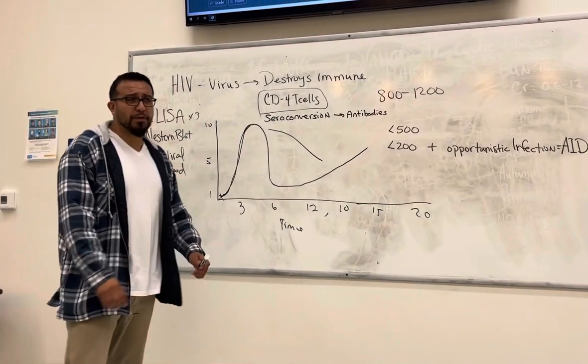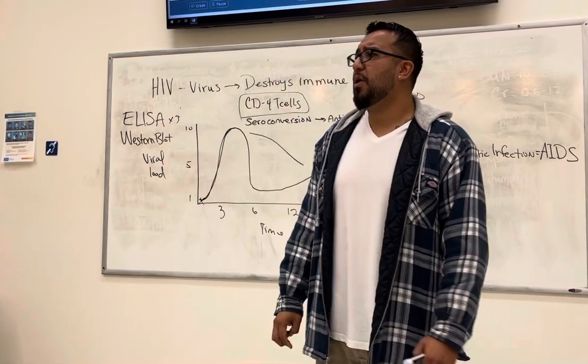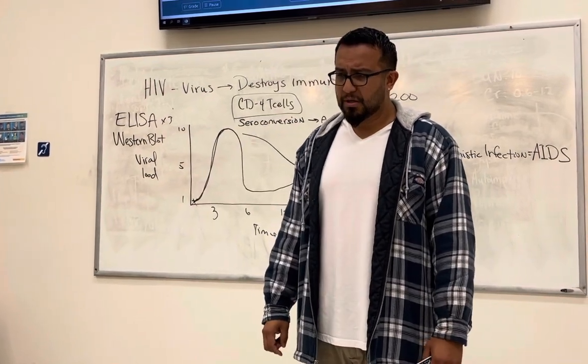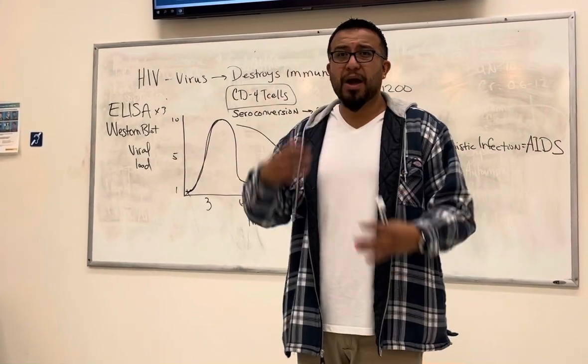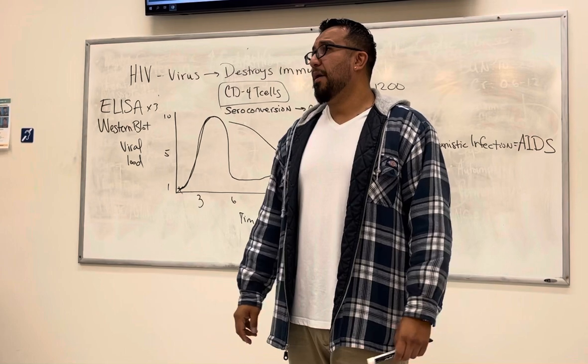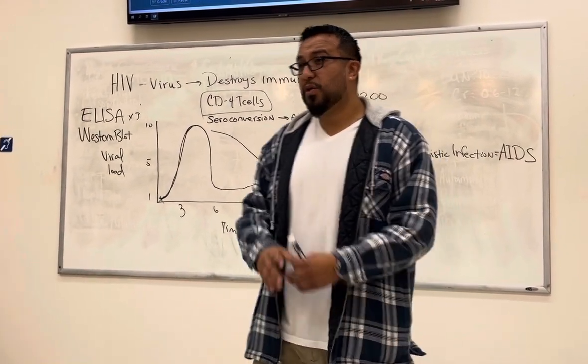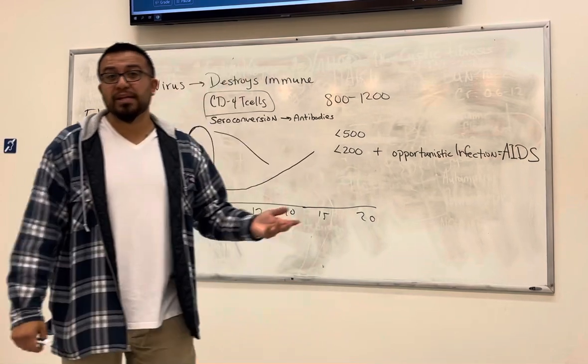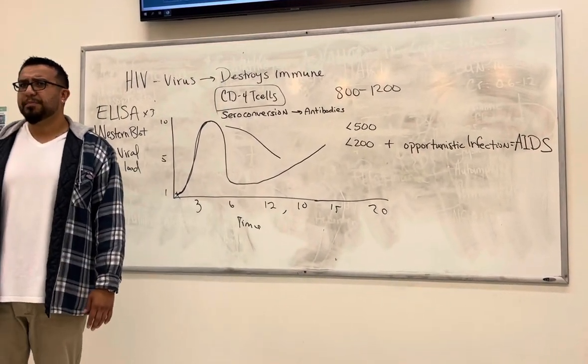People with AIDS are at risk of developing things like cytomegalovirus, something called Kaposi's sarcoma, which is tumors all throughout the body, they can be internal, it can be external, toxoplasmosis. So these are all secondary infections that the patient with AIDS can develop, so we have to be careful of all of those. Does that make sense?